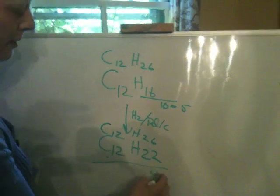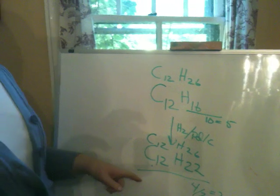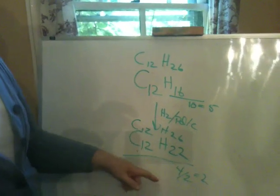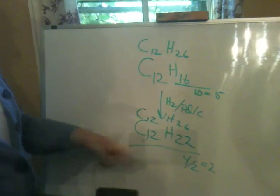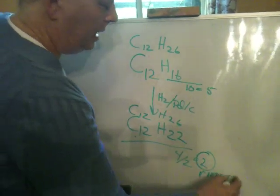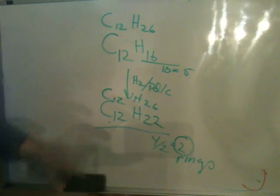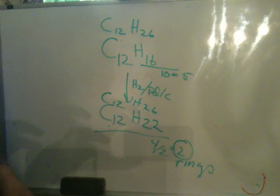What this indicates is after it undergoes catalytic hydrogenation it only has an unsaturation of 2, and what that means is that these two have to be rings because they made it through the process. So if something makes it through a catalytic hydrogenation process it must be rings.